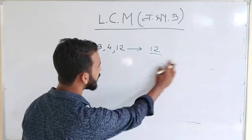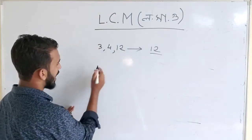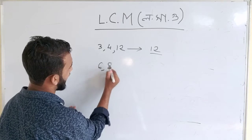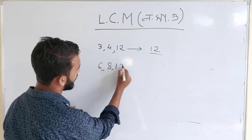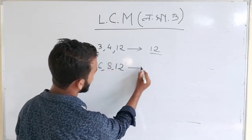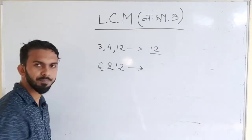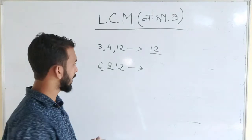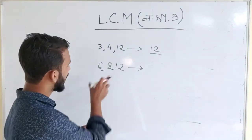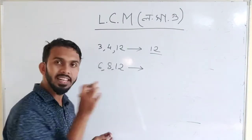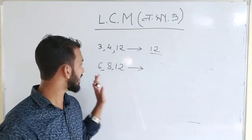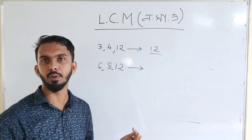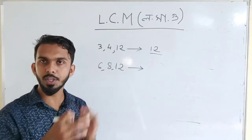Our joint number is 12. For the numbers 6, 8, and 12 — this number is called LCM. The amount of number means multiple.